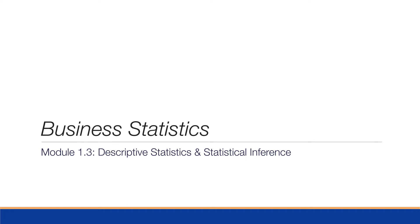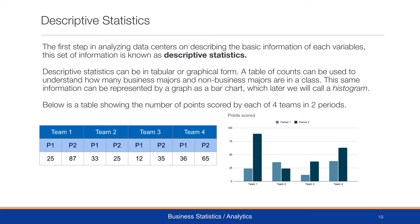Let's start with some initial analysis of some data — the descriptive statistics and statistical inference. The first step in analyzing data centers on describing the basic information of each variable. This set of information is known as descriptive statistics. Descriptive statistics can be in tabular or graphical form.